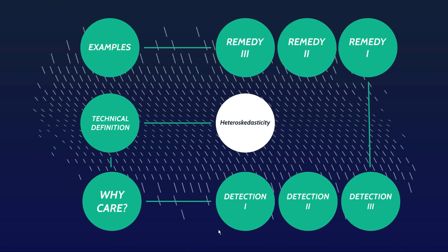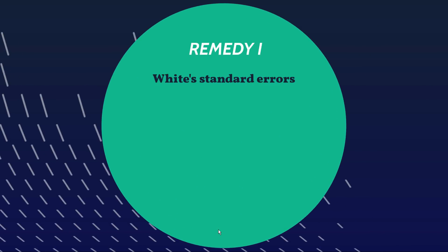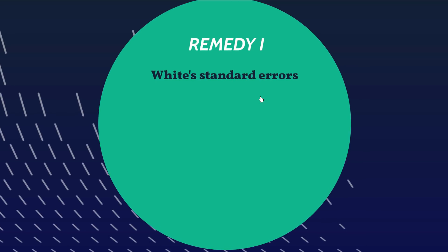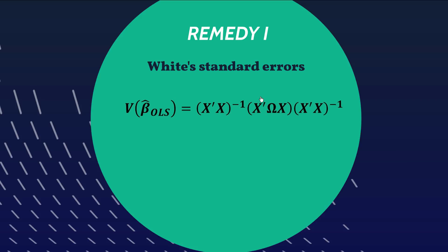Now that we know we have heteroscedasticity, what do we do about it? One easy remedy is to use White's standard errors. All you need to do is find out how to specify it in your statistical software and add it as an option — it will produce regression output with White's standard errors, correcting for the heteroscedasticity. If you're not comfortable with matrix algebra, feel free to skip ahead, but I'll give a quick overview of how White's standard errors are constructed.